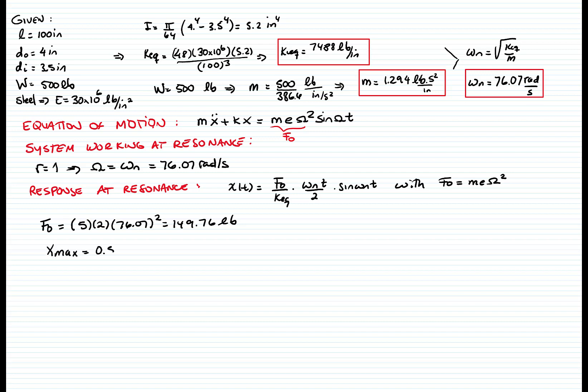The problem says that we have a limit of 0.5 inches. So we calculate that X max as the force of F sub 0, which is m e omega squared, divided by the constant of the spring, times omega n t divided by 2. Let's plug in the numbers.